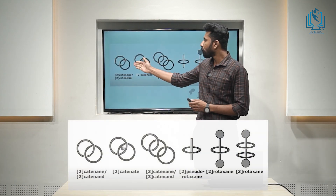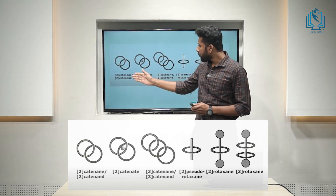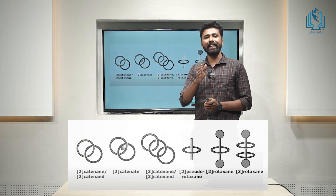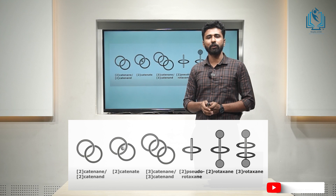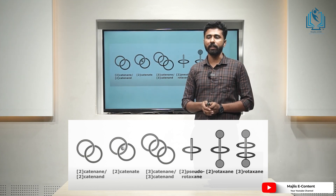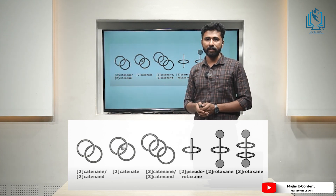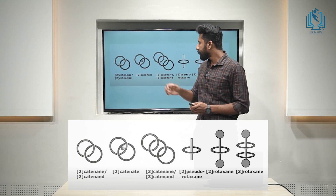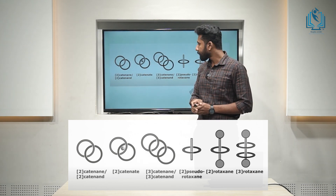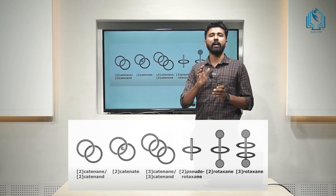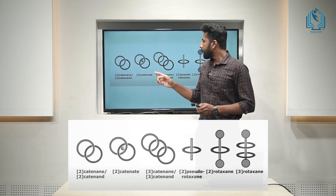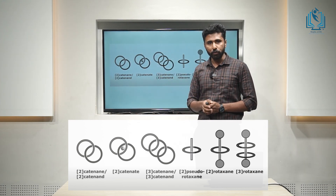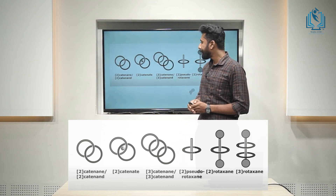As you can see, this is the first example for catenane. Here, you could see two macrocyclic rings — they are interlocked. So the name can be written as N-catenane, where N stands for the number of macrocyclic rings. So here we have two, and it is named as 2-catenane. In the second example, we could see there are two macrocyclic rings and the name also starts with two and it is written as 2-catenate.